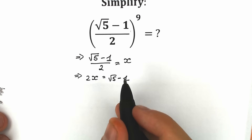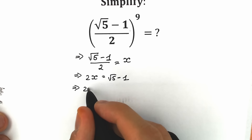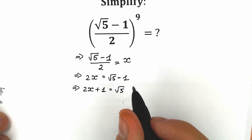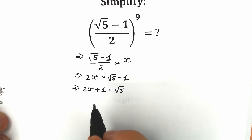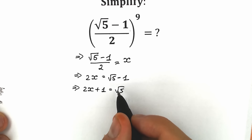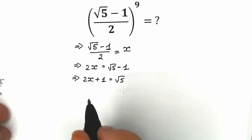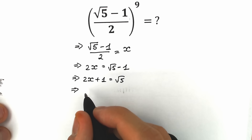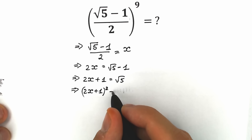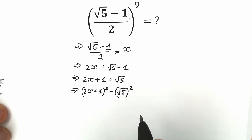Let's bring this minus 1 from the right side to the left side. As a result, we have 2x plus 1 equal to square root of 5. I bring this to the left side because right now I'm going to raise both sides to the second power. We have square root of 5 on the right, and when we raise it to the second power we can easily cancel the square root sign, which helps us a lot. So we have 2x plus 1 squared, equal to square root of 5 squared.